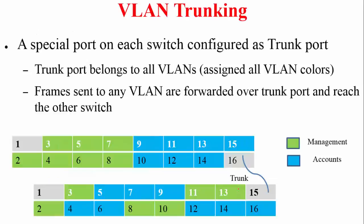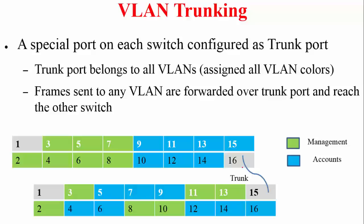To overcome this scalability issue, VLAN trunking is used. A special port on each switch is configured as a trunk port — for example, ports 16 and 15. Trunk ports belong to all VLANs, meaning all VLAN colors are assigned to that single port. Frames sent to any VLAN are forwarded over the trunk port and reach the other switch. For example, if port 3 sends a packet, it goes out the trunk port because that port also carries the green color.